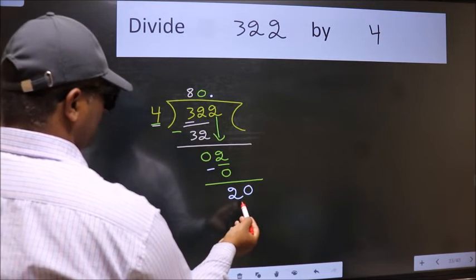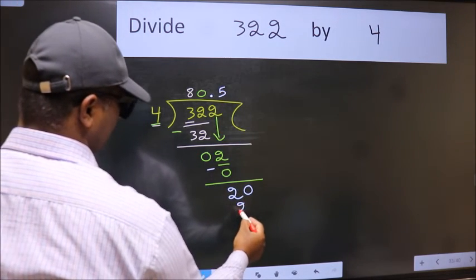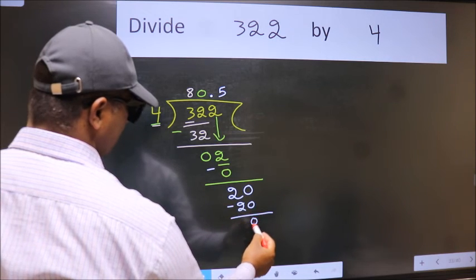So, 20. When do we get 20 in the 4 table? 4 times 5 is 20. Now we subtract and get 0.